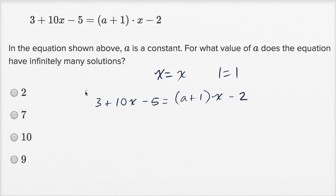On the left hand side, I can add three and negative five, which gives me negative two. So I get 10x - 2 equals, and let me distribute the x. So it's going to be ax + x minus 2. All I did here is I distributed the (x - 2).